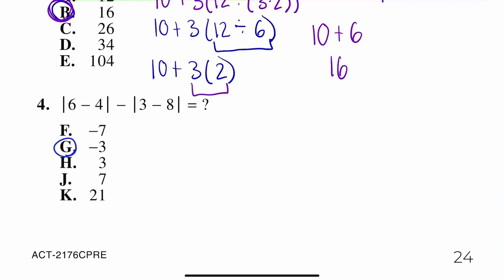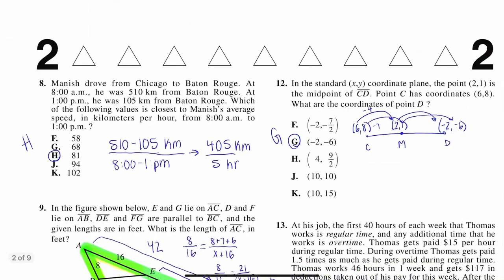Let's look at number 4 here. We have some absolute values. So, I'm going to go ahead and simplify what's inside the absolute values first. 6 minus 4 is 2. Bring down the minus sign. 3 minus 8 is negative 5. The absolute value is the distance away from 0 on a number line. So, 2 is 2 away from 0 on the number line. Negative 5 is 5 away from 0 on the number line. So, basically, just make sure that if something is an absolute value, you're just making it a positive number. 2 minus 5 is negative 3. So, our answer is letter G.